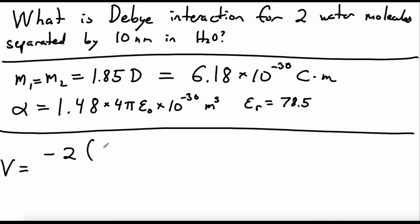So we have a dipole moment of water, 6.18 times 10 to the negative 30 Coulomb meters. We've got to square that term. And then we have the polarizability volume of water, 1.48 times 4 pi epsilon naught times 10 to the negative 30 meters cubed.